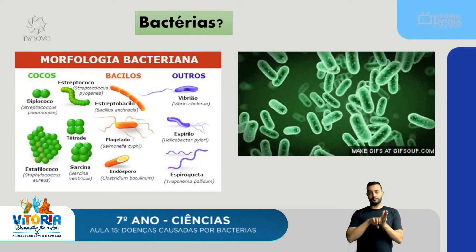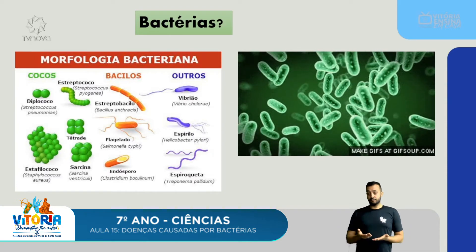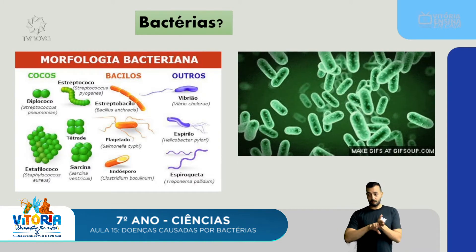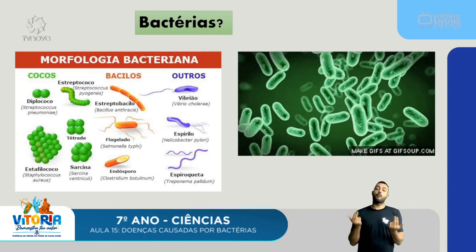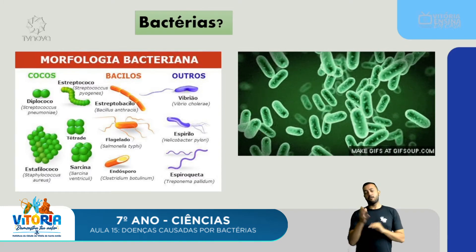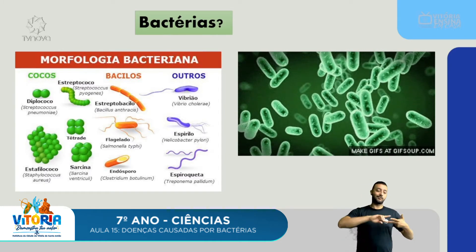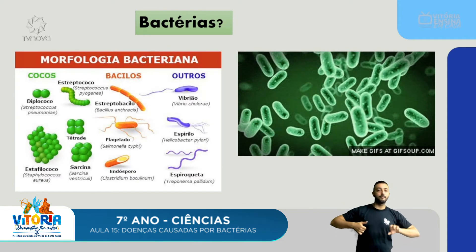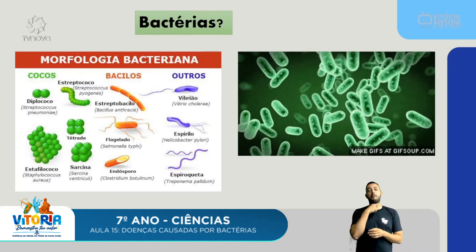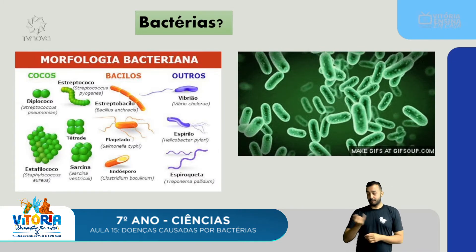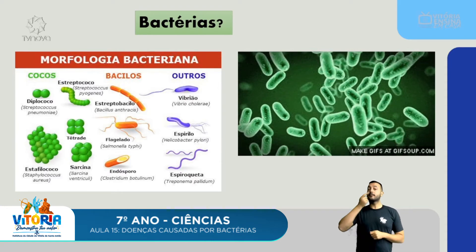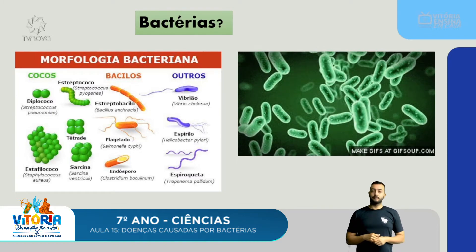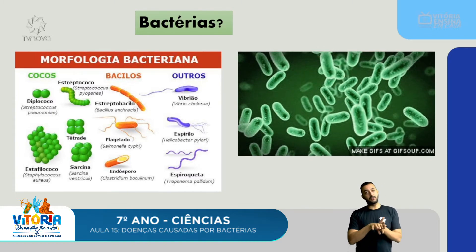A bactéria possui um tipo de reprodução chamado bipartição, em que ela produz outra bactéria igual a ela. Porém, essa bactéria nova pode nascer geneticamente modificada em relação à bactéria original, podendo ser resistente a medicamentos. Por isso é importante que, quando precisarmos tomar antibióticos, tomemos da maneira correta, para não estimularmos o surgimento de bactérias resistentes.